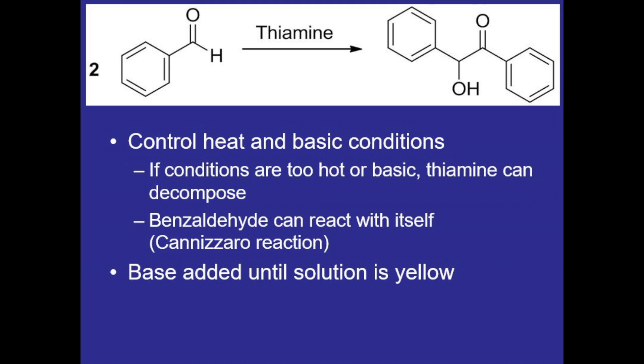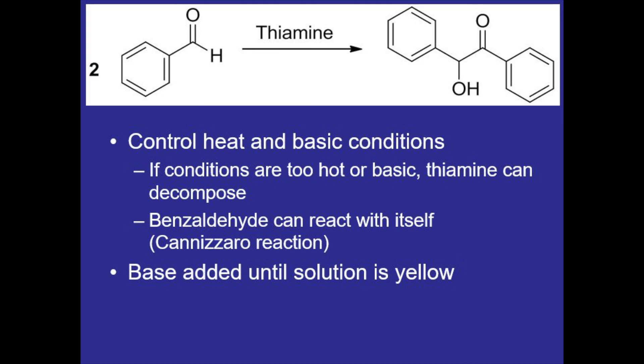So we'll add the base dropwise slowly until the solution turns yellow and that's because thiamine hydrochloride is a salt and it's colorless but as it interacts with sodium hydroxide it turns a bright yellow color and so we'll just add the base up until that point.